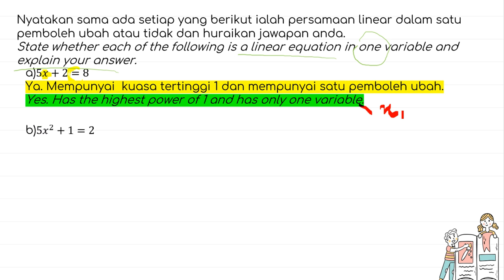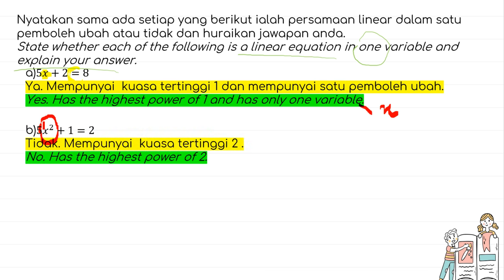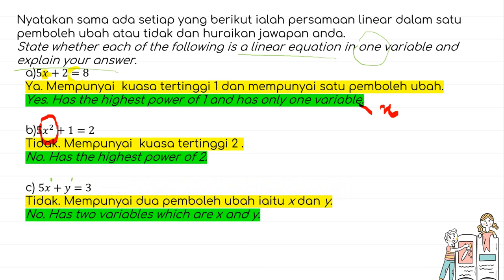The second one: 5x² + 1 = 2. It does have one variable, x, but the problem is it has the highest power of 2. Hence, it is not a linear equation in one variable. The third one: 5x + y = 3. The highest power of variable x and y is 1, so it is linear, but the problem is it has two variables, x and y — so it is not a linear equation in one variable.